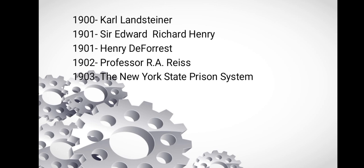In 1901, Henry DeForrest pioneers the first systematic use of fingerprints in the United States in the New York Civil Service Commission. In 1902, Professor R.A. Reiss, a professor at the University of Lausanne in Switzerland and a student of Bertillon, pioneers academic curricula in forensic science. In 1903, New York State Prison System begins the systematic use of fingerprints for United States criminal identification.